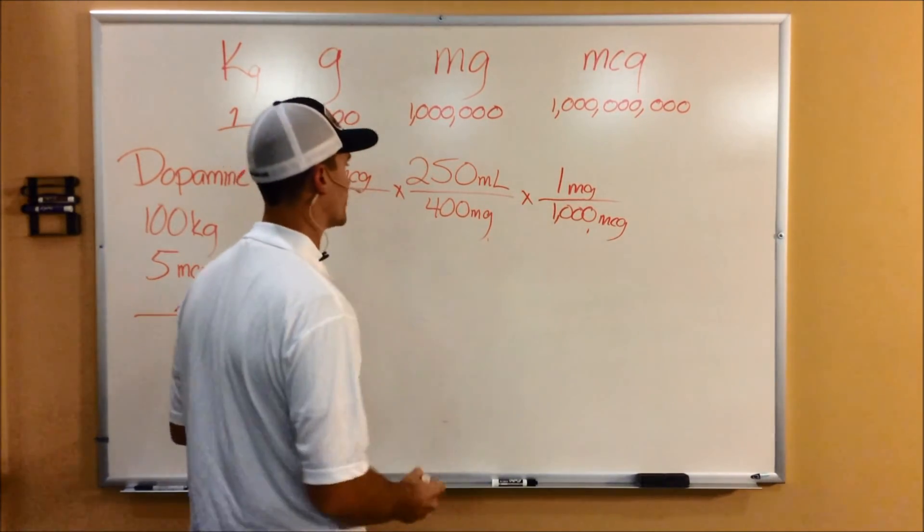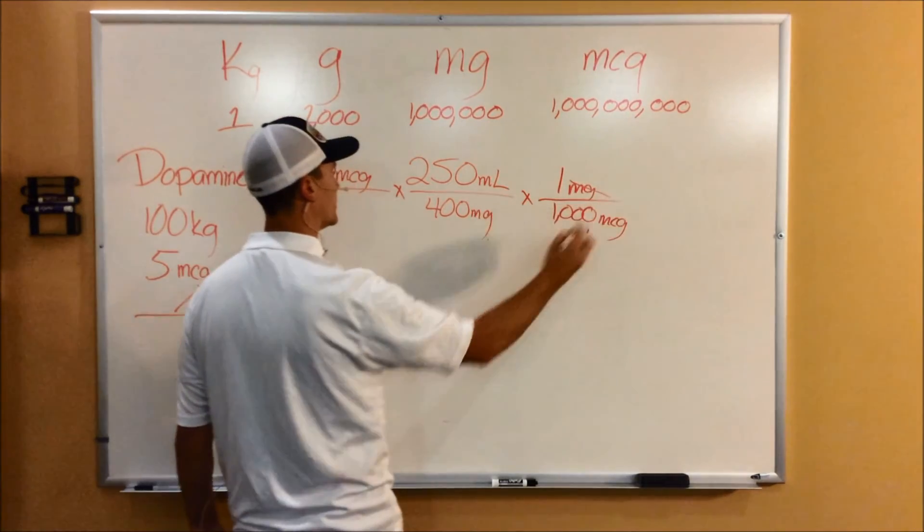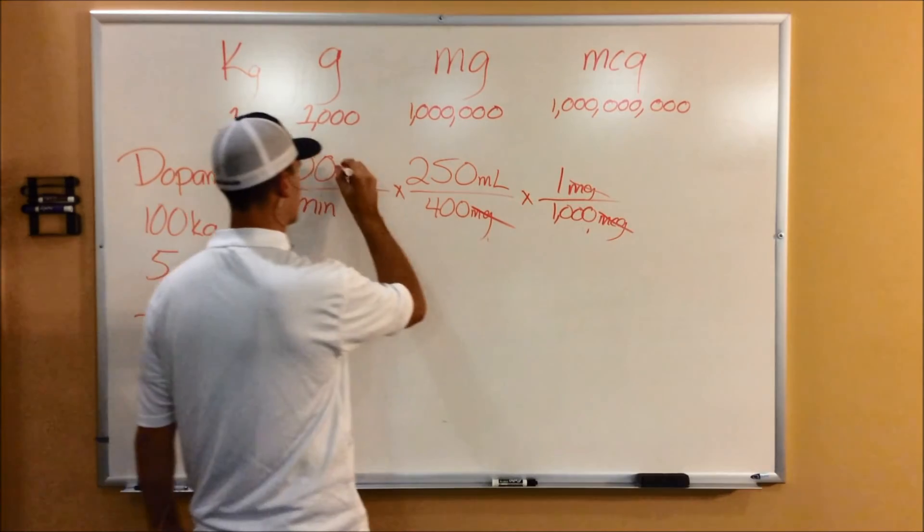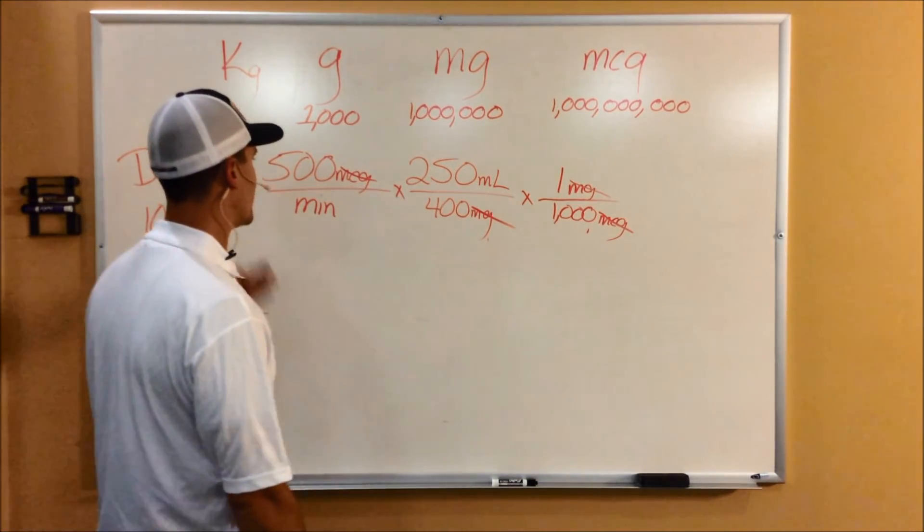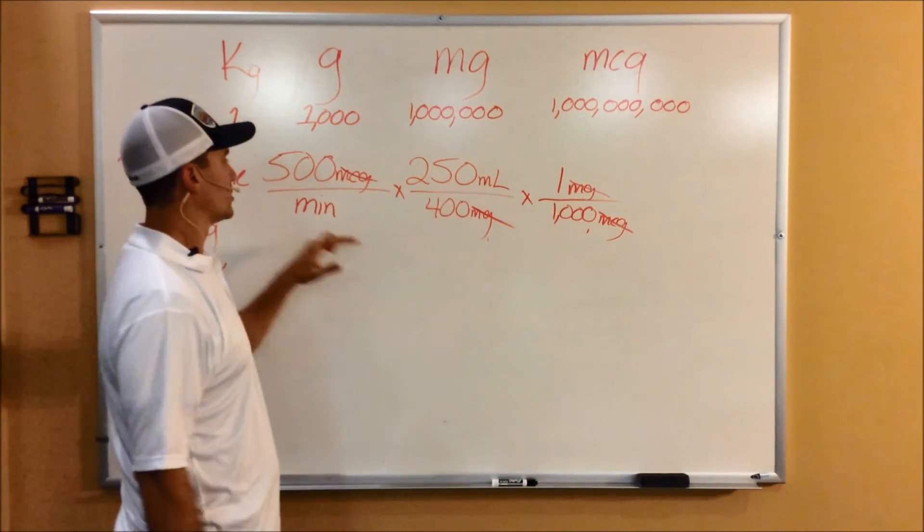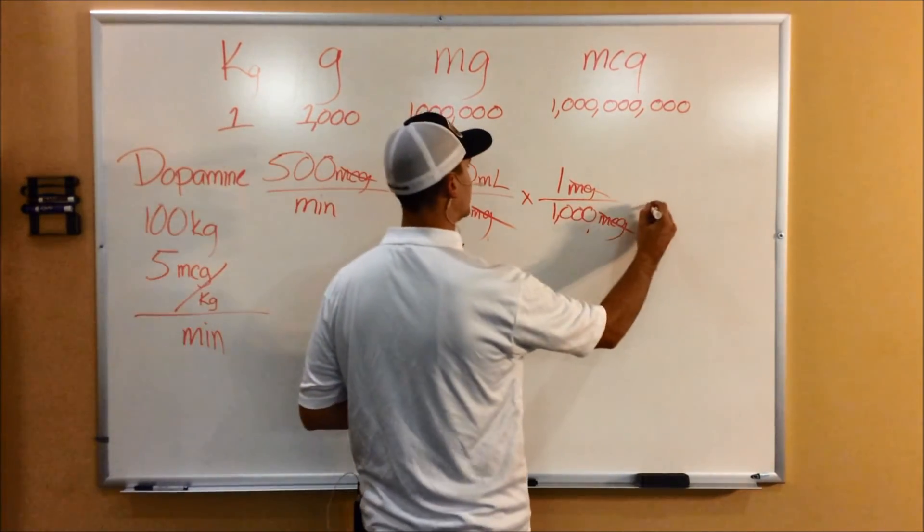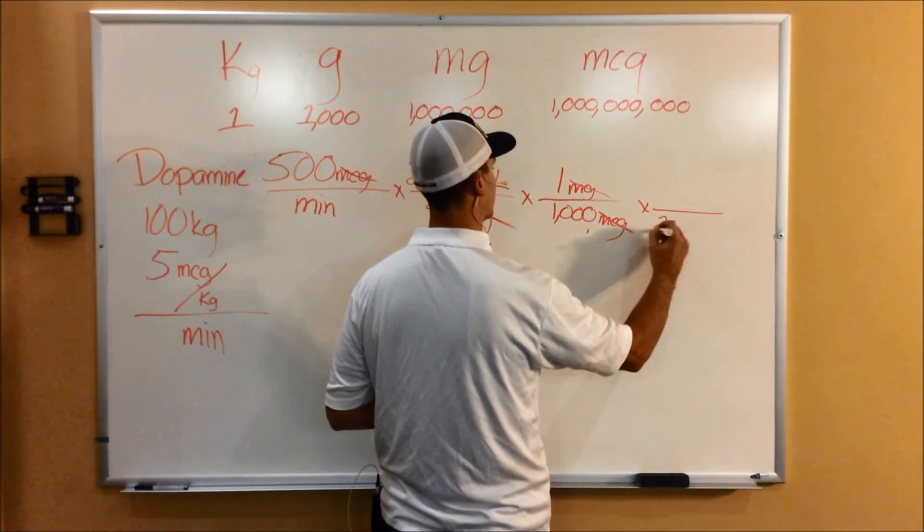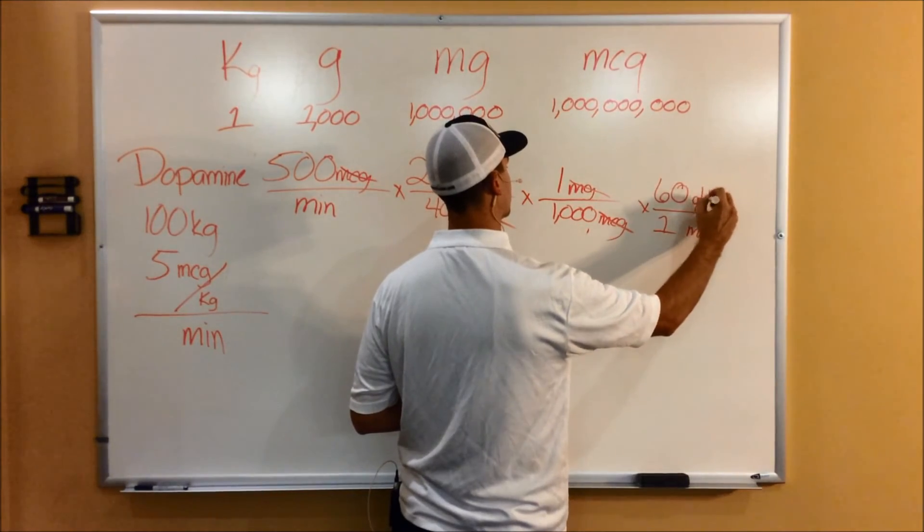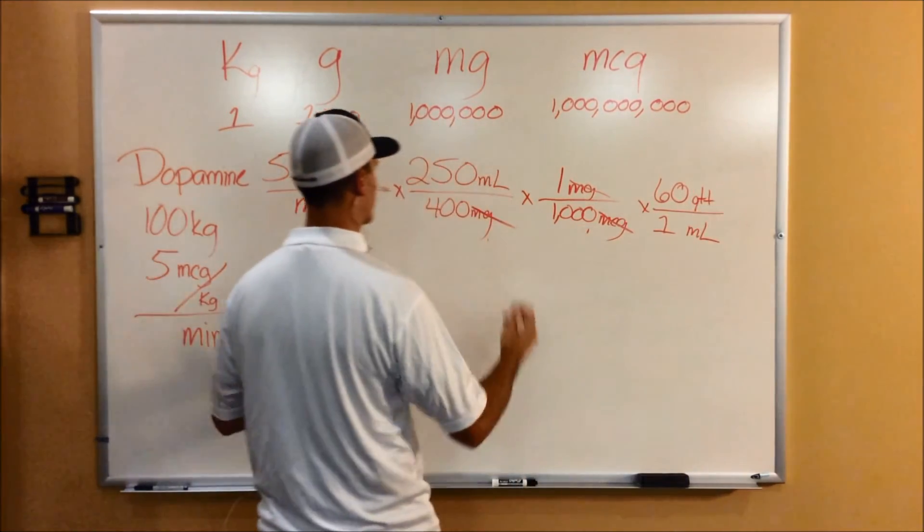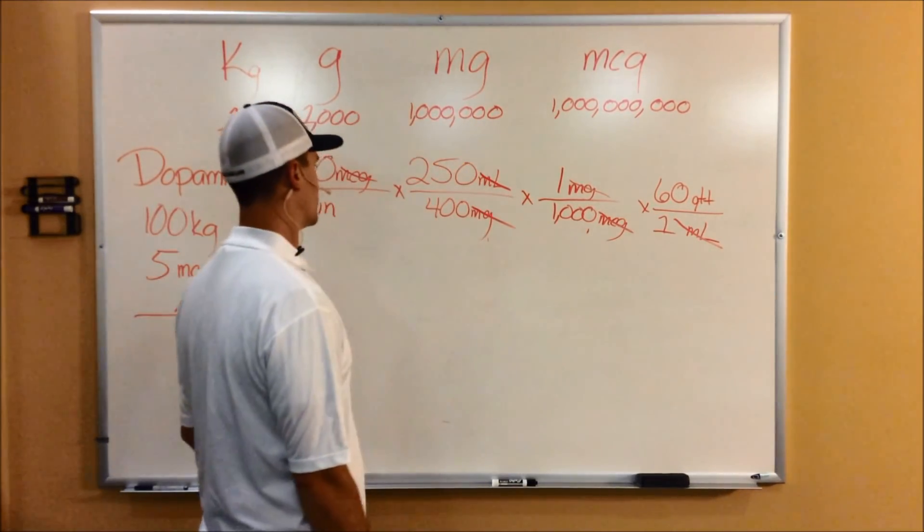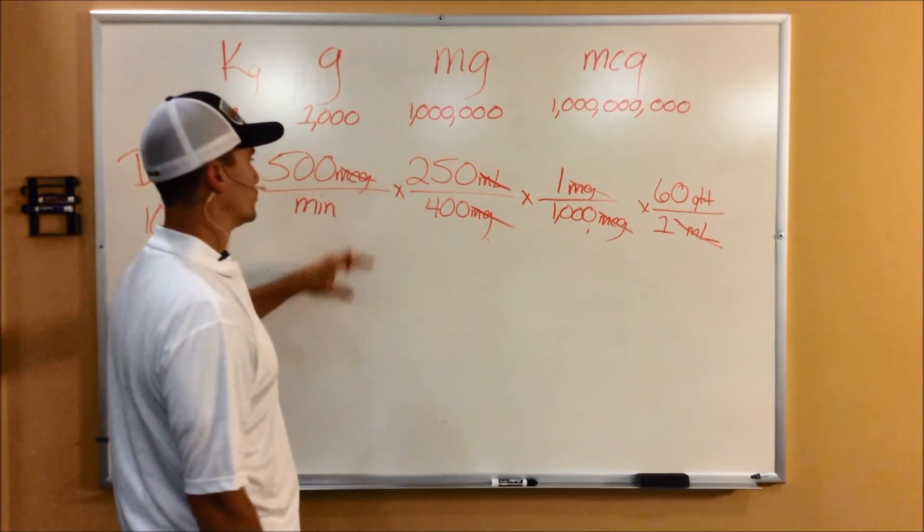Okay, so now we're at the point where we can start crossing out some units. So we've got milligrams on the top, milligrams on the bottom, get rid of that. Micrograms, get rid of that. So now we need to put in our drip factor. Because now, you're at units of milliliters per minute. So, milliliters on the top, 1 milliliter on the bottom, and we're using a 60 drop set. 60 drops per ml. So now, crossing out ml's, crossing out ml's. So ultimately, we're wanting to get to drops per minute.